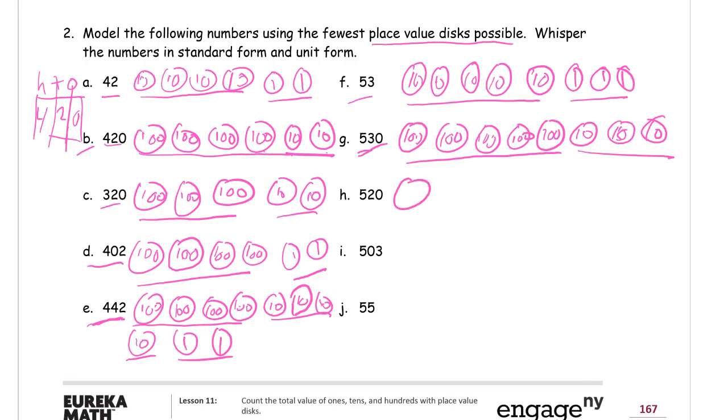So this one is going to have 1 less ten, but the same number of hundreds. It takes 2 tens to make 20. So the standard form is 520. And that's 5 hundreds, 2 tens.